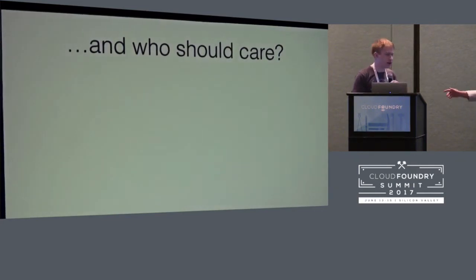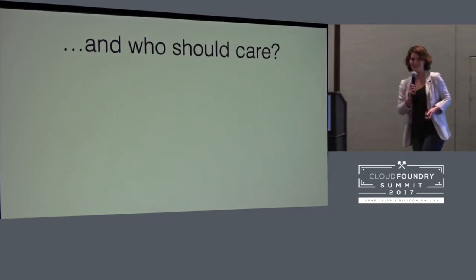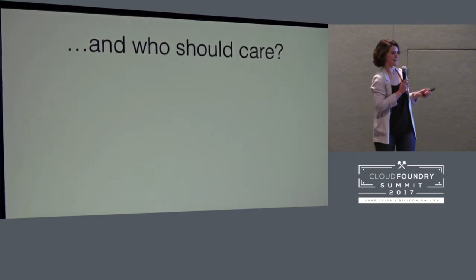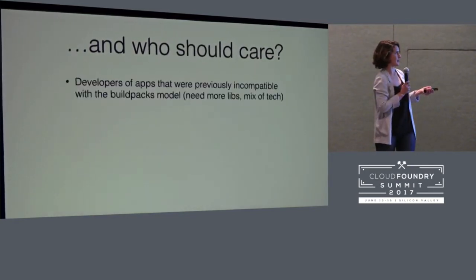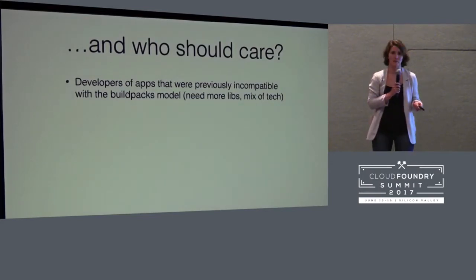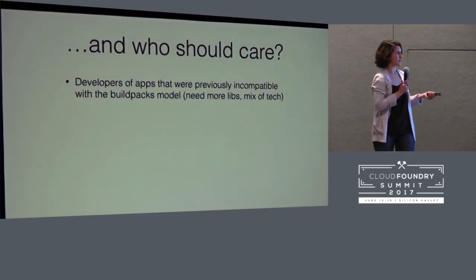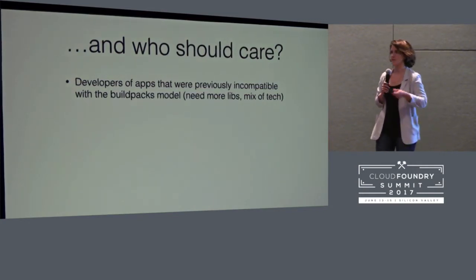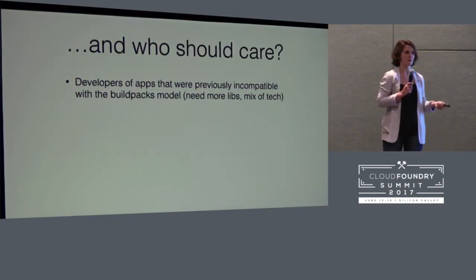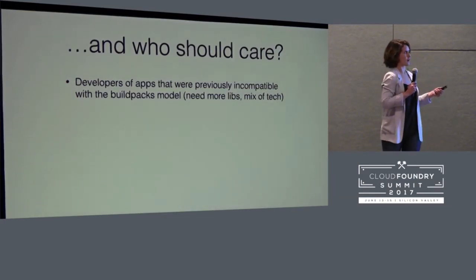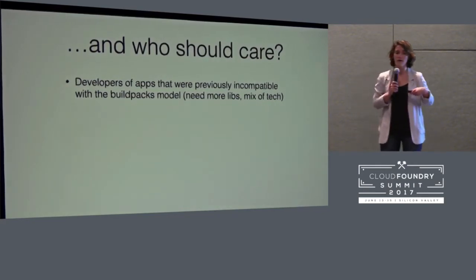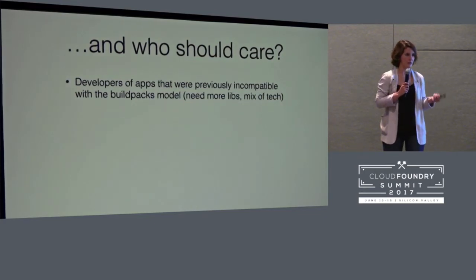Why should you care? I think the most obvious beneficiary of the multiple Buildpack setup are the developers of apps that were previously incompatible with the Buildpacks model — whether they needed more libraries than we provided, or they needed a particular mixture of tech. If they couldn't use one of the Buildpacks we provided, you had two options: either fork the Buildpack and maintain it — dealing with pulling from upstream and making sure you get our updates — or use an image, in which case you don't benefit from the Buildpack structure at all, and you don't benefit from our CVE-related updates, security patches, et cetera.